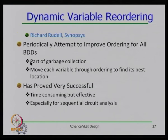Another technique is sifting, proposed by Richard Rudell from Synopsys, which periodically attempts to improve variable ordering. It moves each variable from its current location to all other locations and finds the best place — the location that results in the smallest ROBDD. It is time consuming but very effective.